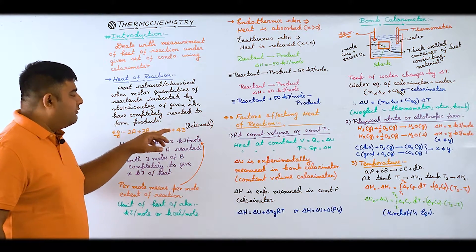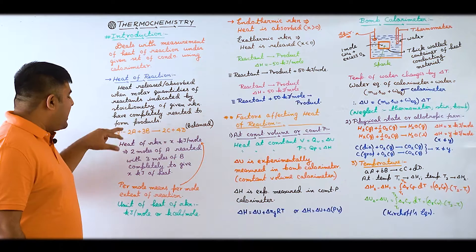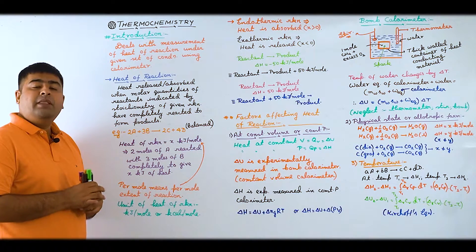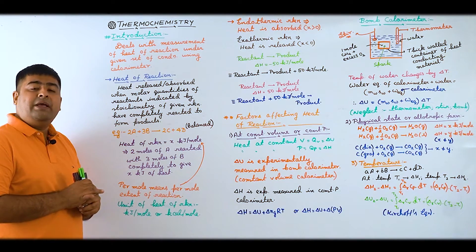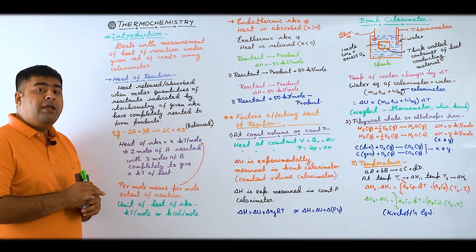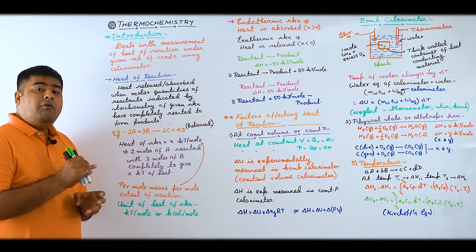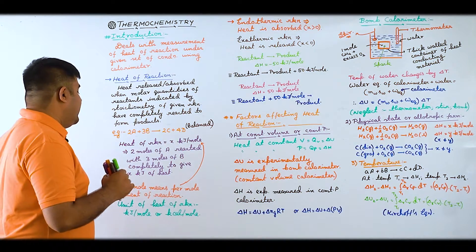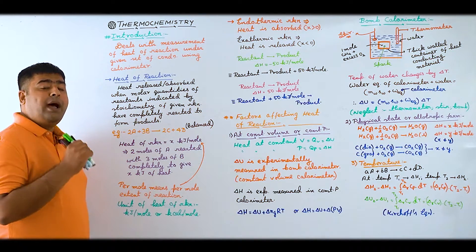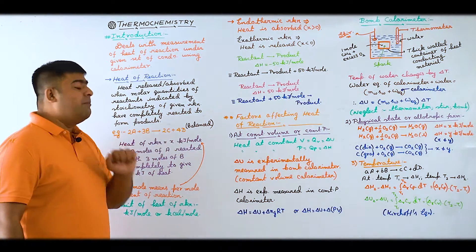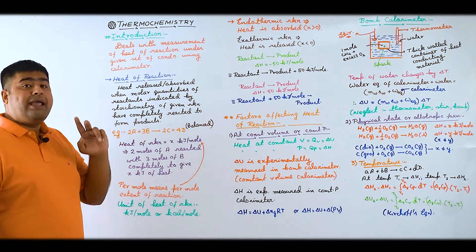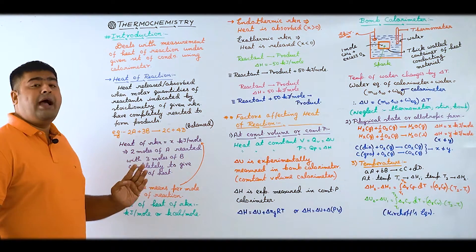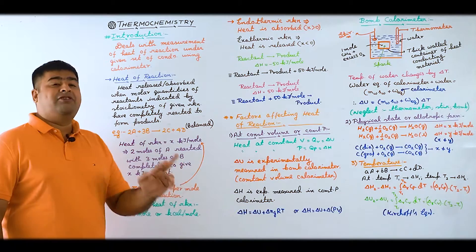This is a balanced reaction. In this reaction, the stoichiometry shows 2A + 3B → 2C + 4D, and the heat of reaction equals x kJ/mol. That means when 2 moles of A reacts completely with 3 moles of B, it gives x kilojoules of heat. Now the question is: does 'per mole' mean per mole of A or per mole of B? Per mole means per mole extent of reaction.